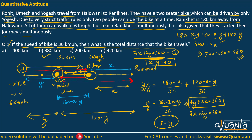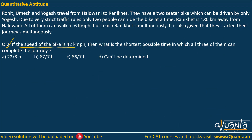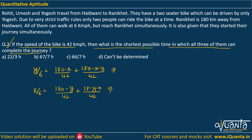Now for the second question: if the speed of the bike is 42 kmph, what is the shortest possible time in which all three can complete the journey? We use the same approach but replace the bike speed with 42. Solving the updated equations gives 8y + 2x = 360 and 8x + 2y = 360. Subtracting gives x = y, and substituting back yields x = y = 36.